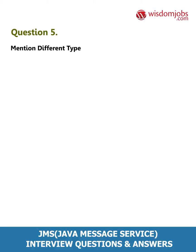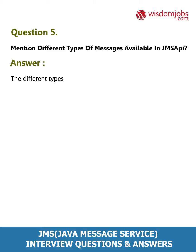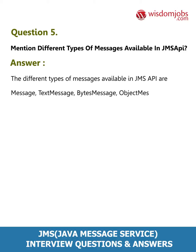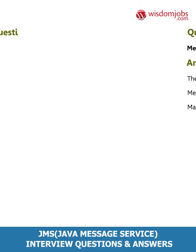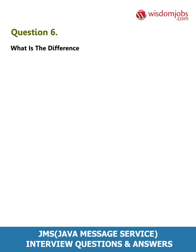Question 5: Mention different types of messages available in the JMS API. Answer: The different types of messages available in the JMS API are: Message, TextMessage, BytesMessage, ObjectMessage, and MapMessage.